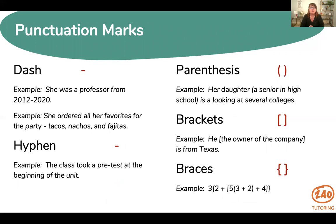Next we have a dash. Dashes are used to indicate a range in time or a connection between things. They can also be used in place of a comma, colon, or parentheses. So in this example: she was a professor from 2012 to 2020 — a range of time. She ordered all of her favorites for the party — tacos, nachos, and fajitas — so we used it in place of a colon there.